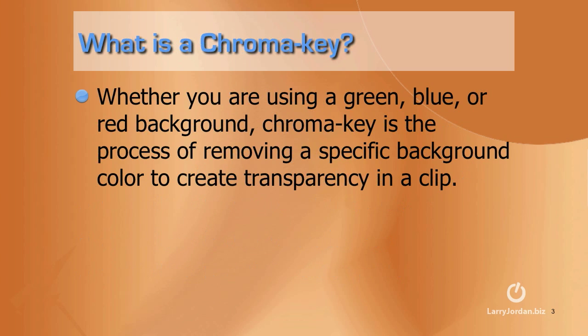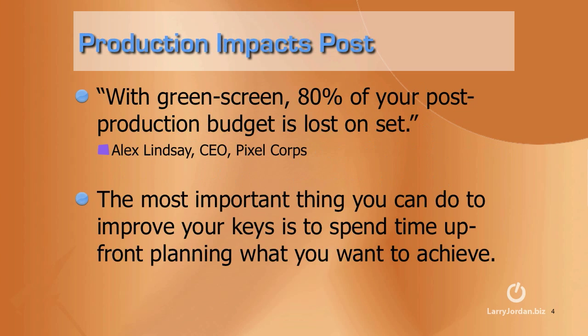Let's start with a simple definition. What is a chroma key? Whether you're using a green, a blue, or a red background, chroma key is the process of removing a specific background color to create transparency in a clip, so we can take the foreground and put it over some other background — something that we couldn't easily shoot inside the studio.